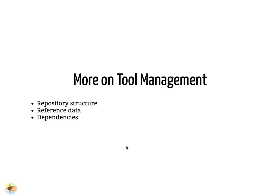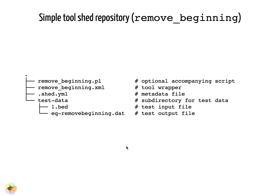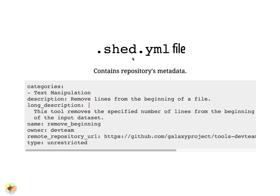This is a picture of the directory structure of a simple tool shed repository containing one tool. It has a tool wrapper, remove_beginning.xml, an accompanying Perl script called from within the wrapper, an input and output test file, and shed.yml containing tool metadata. The shed.yml file sets the repository name and owner and contains the development URL for the tool, which is displayed in the tool shed as a link to the tool's files — the GitHub repository where you would raise an issue or make a pull request.